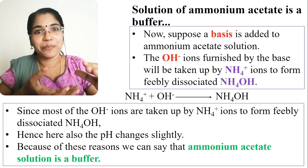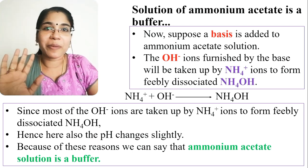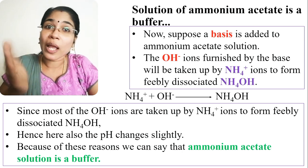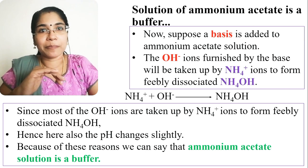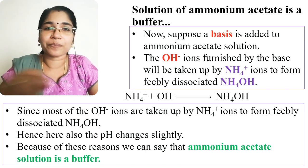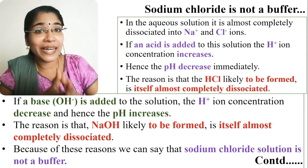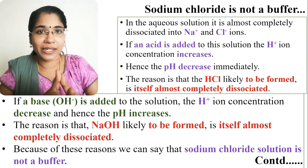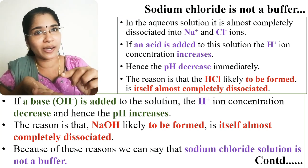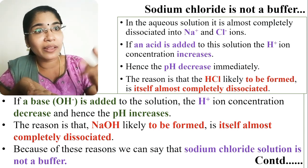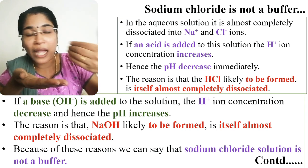Because of these reasons, we can say that ammonium acetate solution is a buffer — it resists changes in pH when acid or base is added. In contrast, for sodium chloride, if an acid is added to the solution, H⁺ ions are added with no mechanism to absorb them.